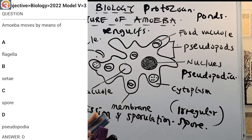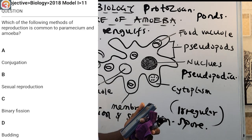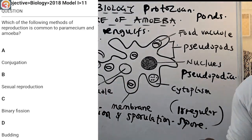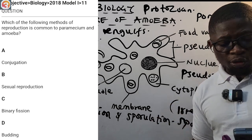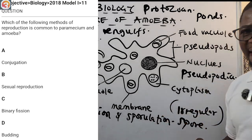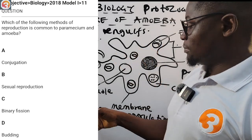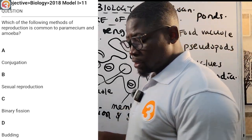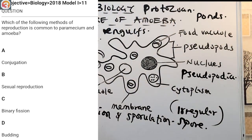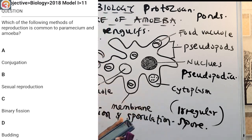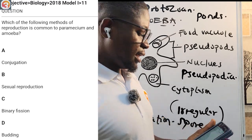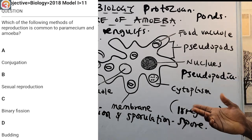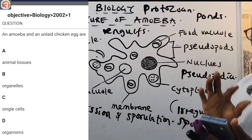Let's go to another question: 2018 question number 11 — 'Which of the following methods of reproduction is common to paramecium and amoeba?' The options are: A) conjugation, B) sexual reproduction, C) binary fission, D) budding. The correct answer is C — binary fission, which is fission. It is also common to paramecium.